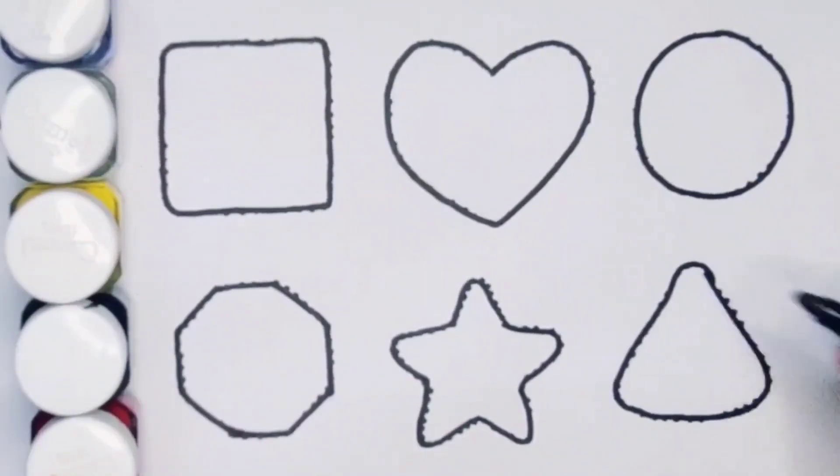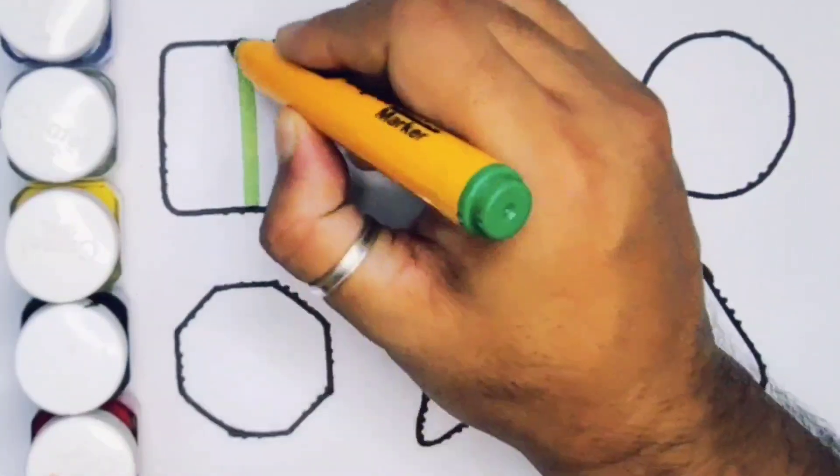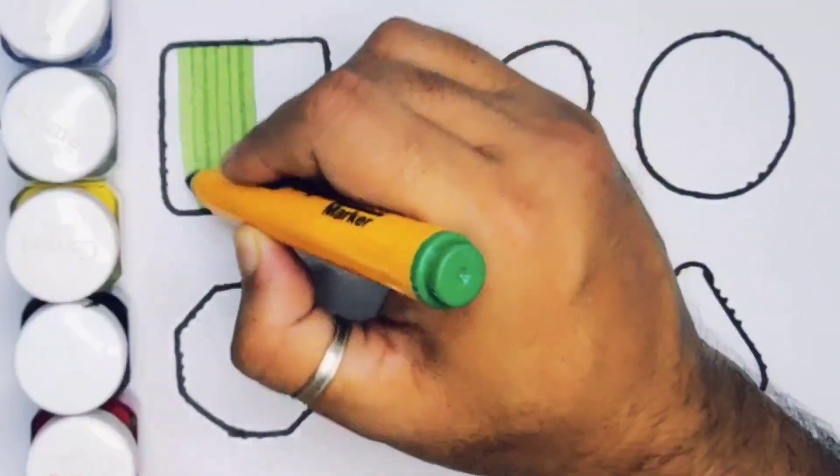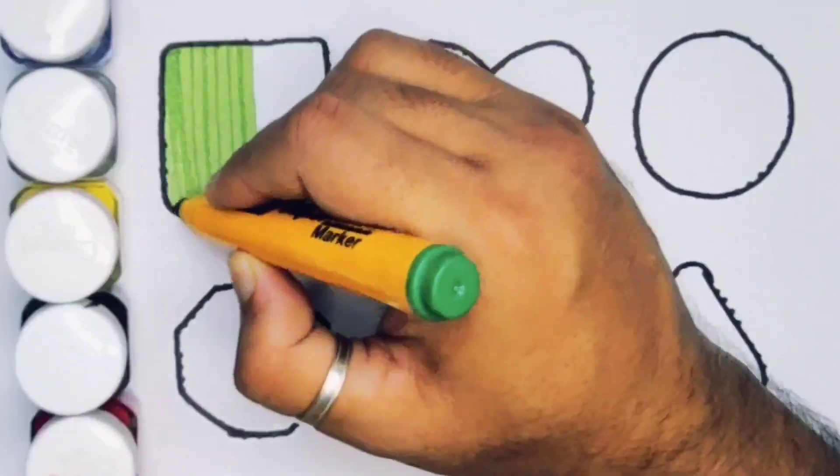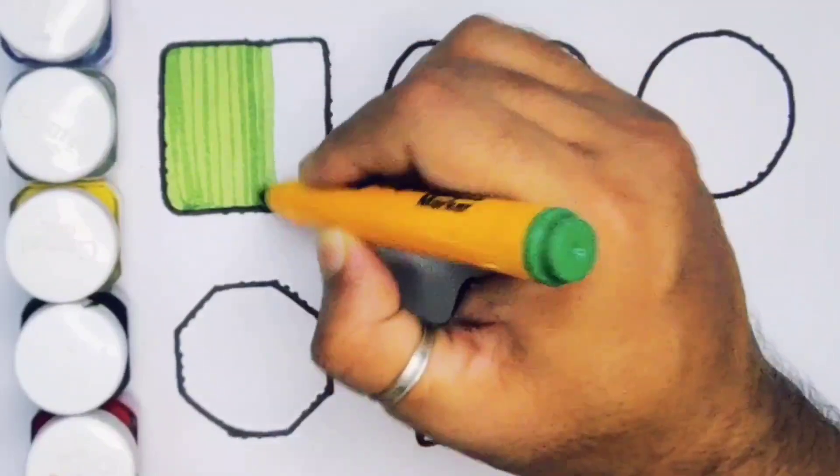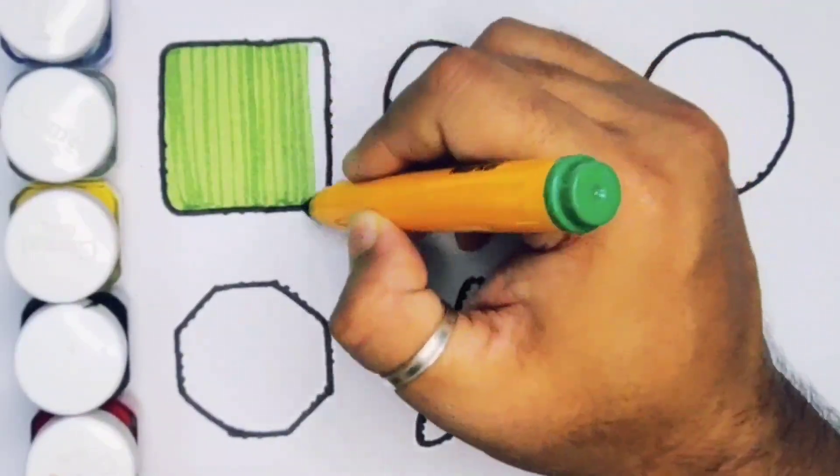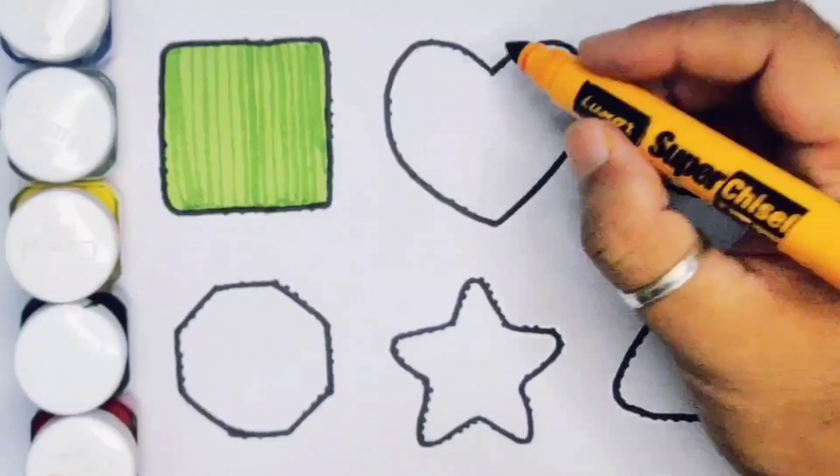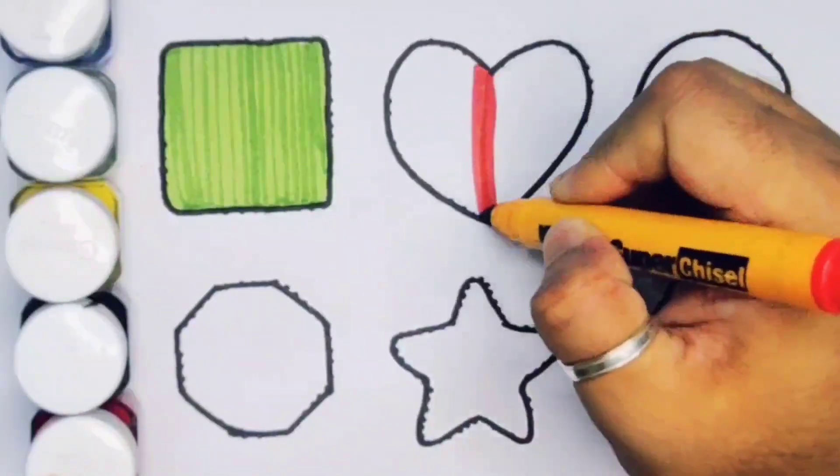Now we are going to put the color. Green color square, square, next red color heart.